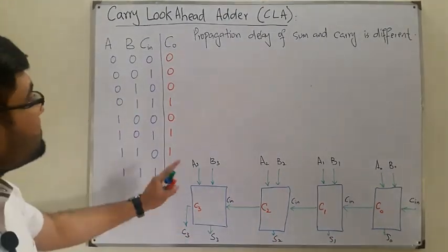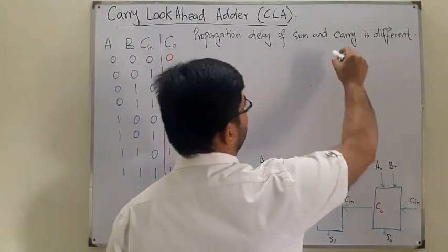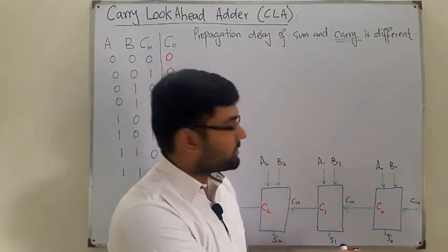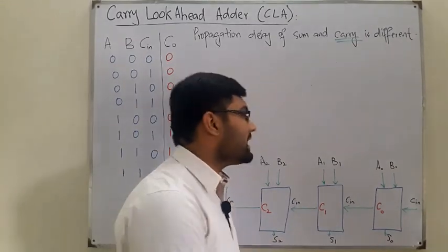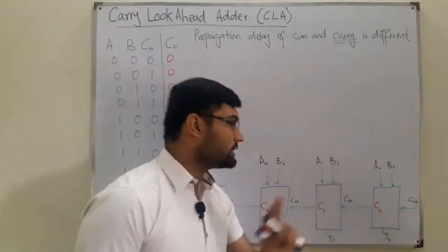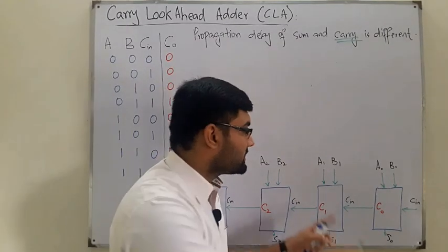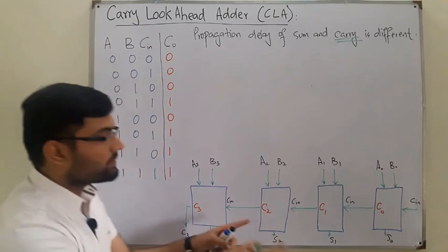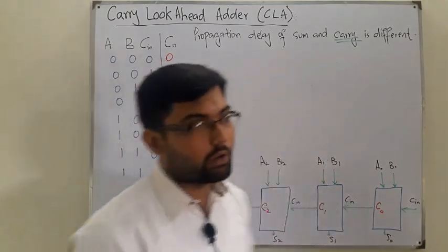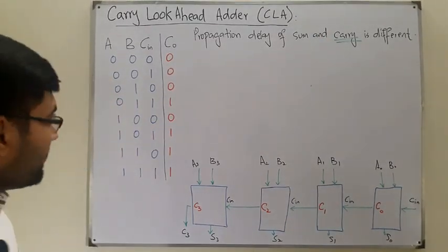We are particularly interested in the propagation delay of the carry. That's because the sum is given directly — we don't need to do anything else with it. But with the carry, we need to feed it as a third input to the next adder. C0 is fed as input to the second full adder, C1 to the next, C2 to the next, and finally C3. So therefore we are interested in the propagation delay of carry.